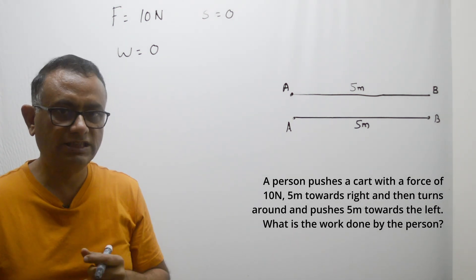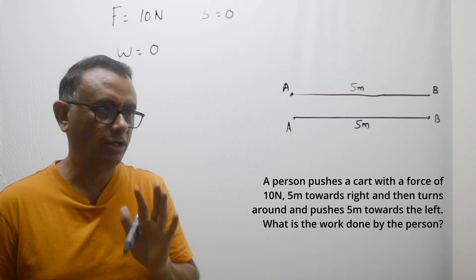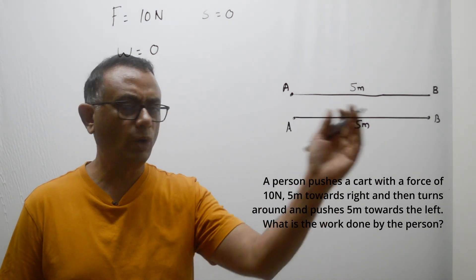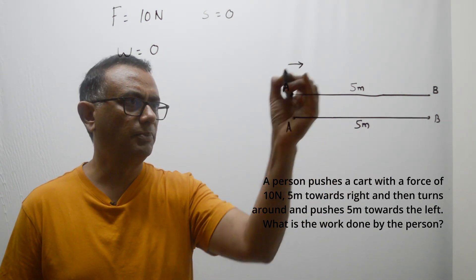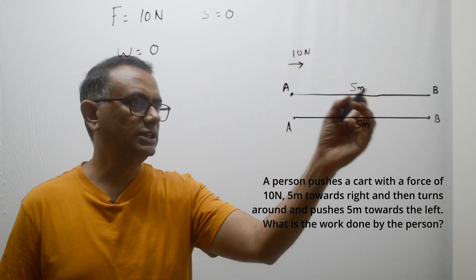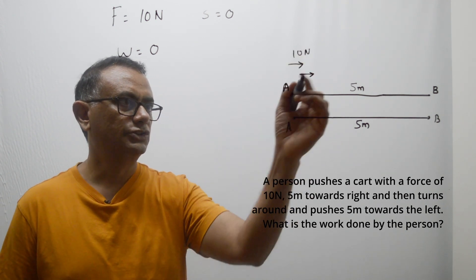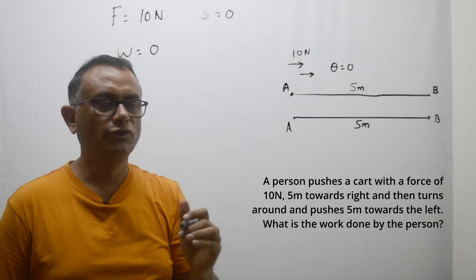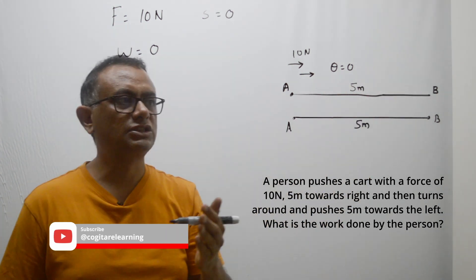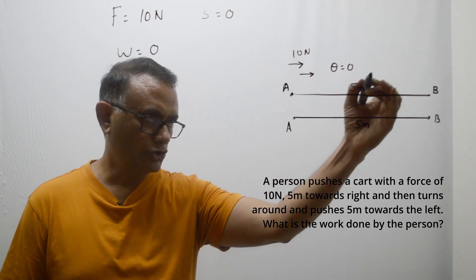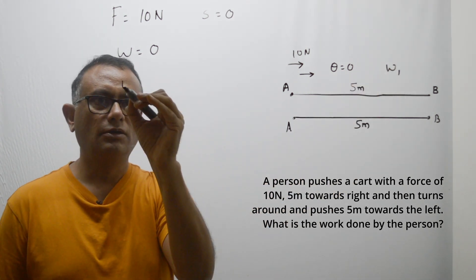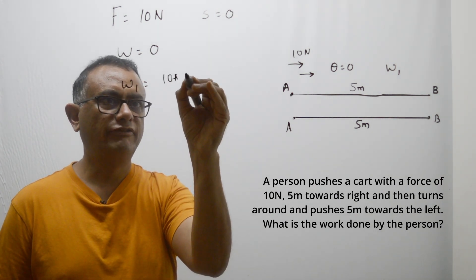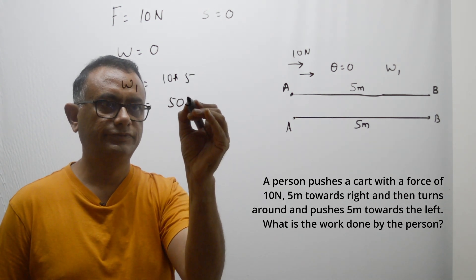But in physics, work done doesn't work that way. We consider each leg of the journey separately. Look at the force being applied in this direction — 10 newtons — and the displacement is also in this direction, so the angle theta between them is zero. We can say force multiplied by this distance of 5 meters. So work done in the first leg, W1, from A to B is 10 newtons multiplied by 5, which is 50 joules.